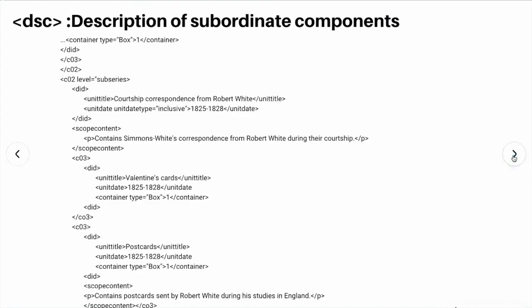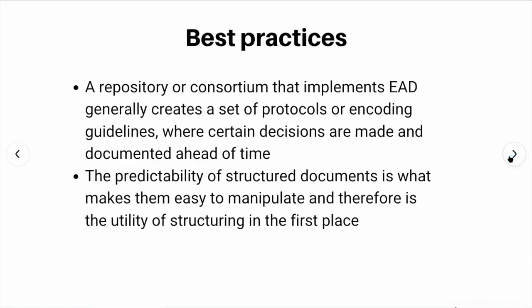Just as archival description is iterative, the structure of EAD is also iterative. A repository or consortium that implements EAD generally creates a set of protocols, or encoding guidelines, where certain decisions are made and documented ahead of time. These guidelines are often referred to as best practices, and they help to ensure that the implementation of EAD in a repository is predictable and consistent. The predictability of structured documents is what makes them easy to manipulate, and therefore is the utility of structuring in the first place.